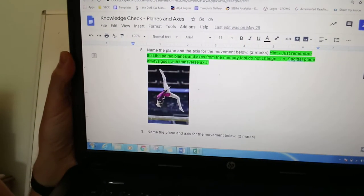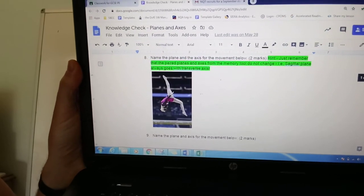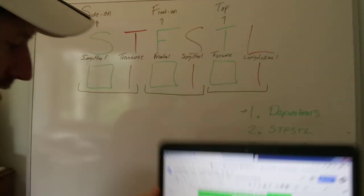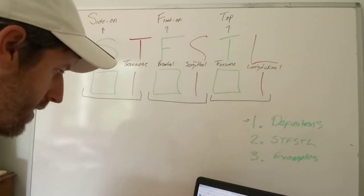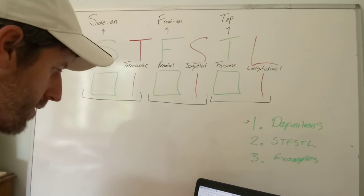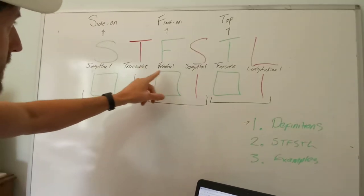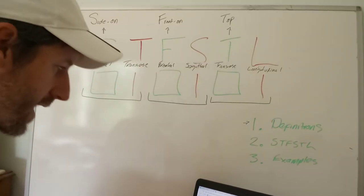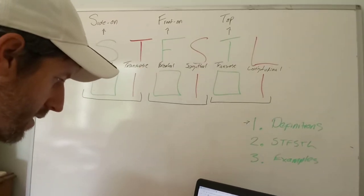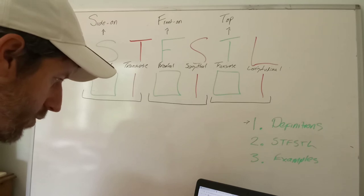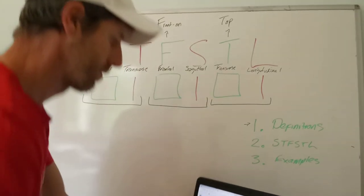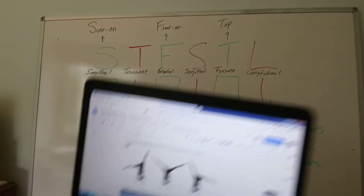The gymnast is also sagittal plane and transverse axis. The next one is frontal plane and sagittal axis — that would be the cartwheel.